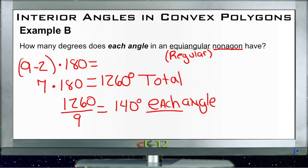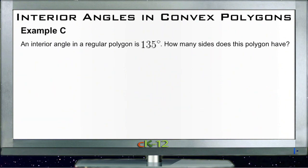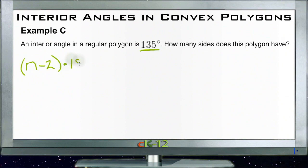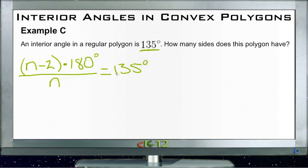Let's take a look at example C. Each interior angle in a regular polygon is 135 degrees — how many sides does this polygon have? We know every angle is 135 and we want to know how many sides there are. We use both formulas together: n minus 2 times 180 gives the total degrees, and dividing that by n gives degrees per angle. Since we know each angle is 135 degrees, we can use that to solve for n.